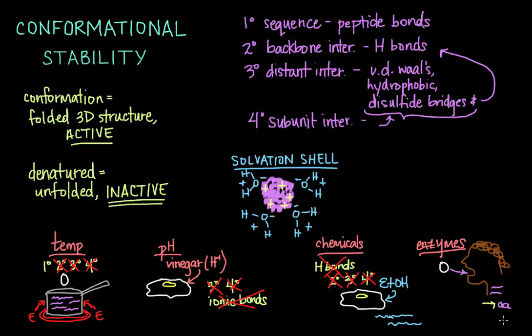They break the peptide bonds, so that we can absorb these amino acids from our intestines into our bloodstream. Then we can use them as building blocks for our own protein synthesis. That's how enzymes can alter a protein's primary structure, and thus the protein's overall conformational stability.